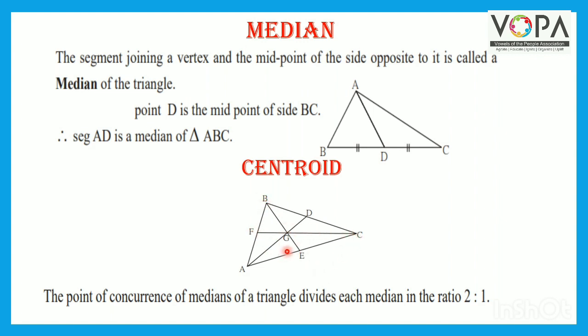And you can see all these three medians concurrent in one point and that point is called centroid. Now if you see carefully, segment AG is double than the segment GD.